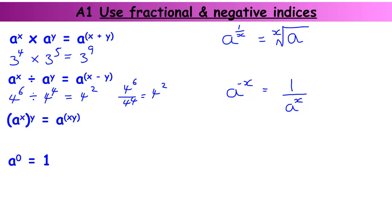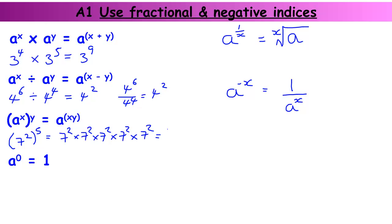When I'm doing a power of a power, so if I have 7 to the power of 2, and that's all to the power of 5, then that means I've got 7 to the power of 2, times 7 to the power of 2, times 7 to the power of 2, times 7 to the power of 2, times 7 to the power of 2 — repeated 5 times. So using the multiplication rule, that would be 7 to the power of 2 plus 2 plus 2 plus 2 plus 2, which is 10. But the quick way is just to multiply the 2 and the 5.